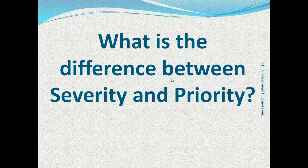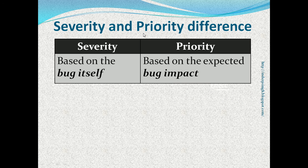Let us do a comparison of severity and priority. What is the difference between severity and priority is a common interview question. The first difference is that severity is based on the bug itself — it is set by the person who reports the bug. Typically the software tester logs a bug report, but sometimes product managers and developers also report bugs.